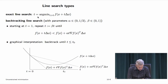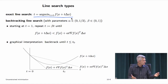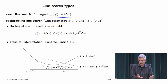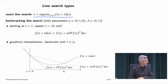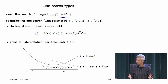There are different line search types. One is an exact line search: you've specified a direction, x + t·Δx is a ray for t > 0, and you choose t to minimize f along that ray. How do you minimize a convex function of a single variable? Binary search — bisection. That's all. So the exact line search would be done with bisection.